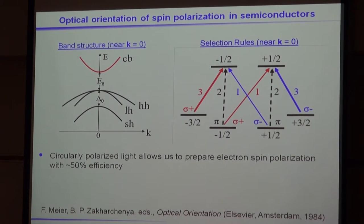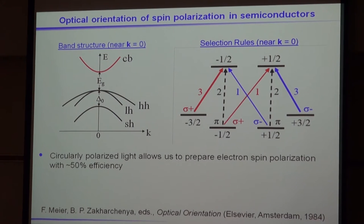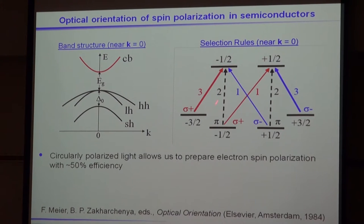What enables us to do these measurements are the spin-dependent optical selection rules. In materials such as gallium arsenide, there are spin-dependent optical selection rules — a relationship between the polarization of light and the electron transitions that are allowed in the material. Sigma-plus is right-circularly polarized light. If I shine right-circularly polarized light resonant with the transition from the valence band to the conduction band, I can get a three-to-one ratio of spin minus-one-half in the conduction band versus spin plus-one-half. This allows me to prepare spin-polarized electrons with roughly 50% efficiency.